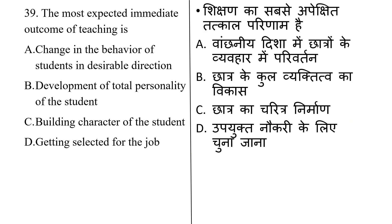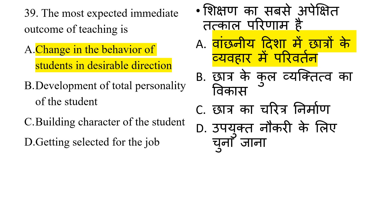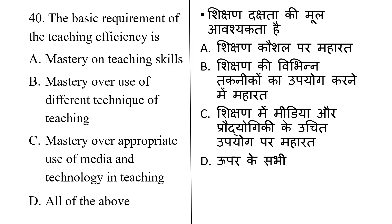The most accepted immediate outcome of teaching is: change in the behavior of students in a desirable direction, development of total personality of the students, building character of the students, or getting selected for the job. The most accepted immediate outcome of teaching is change in the behavior of students in a desirable direction.